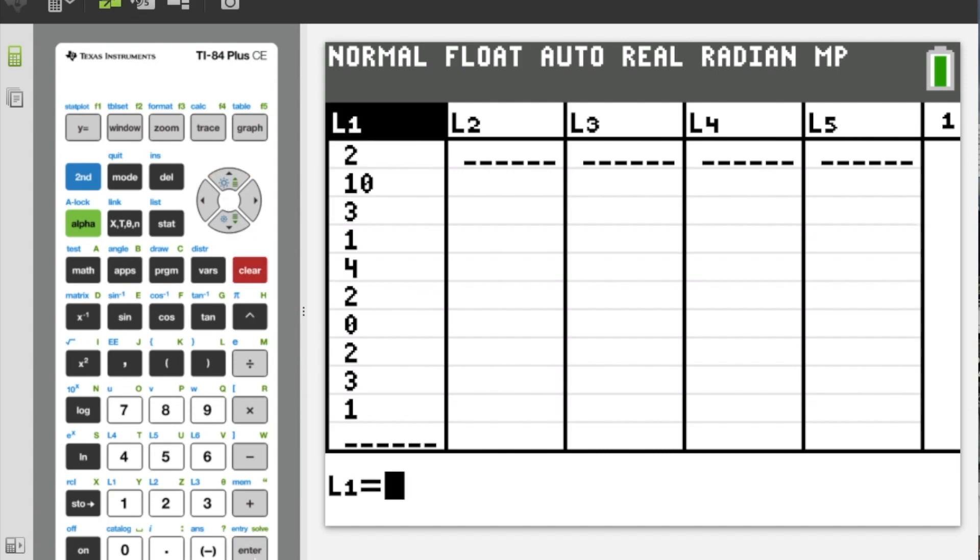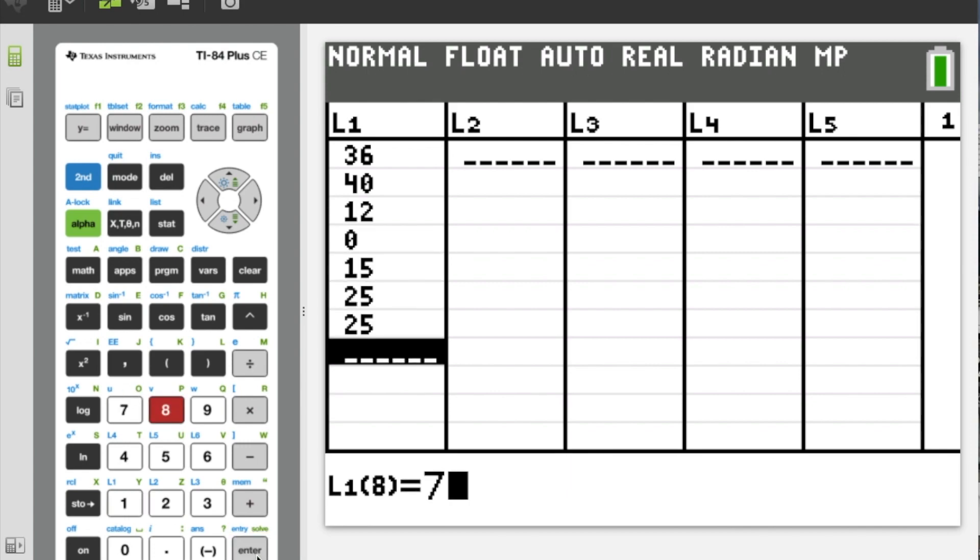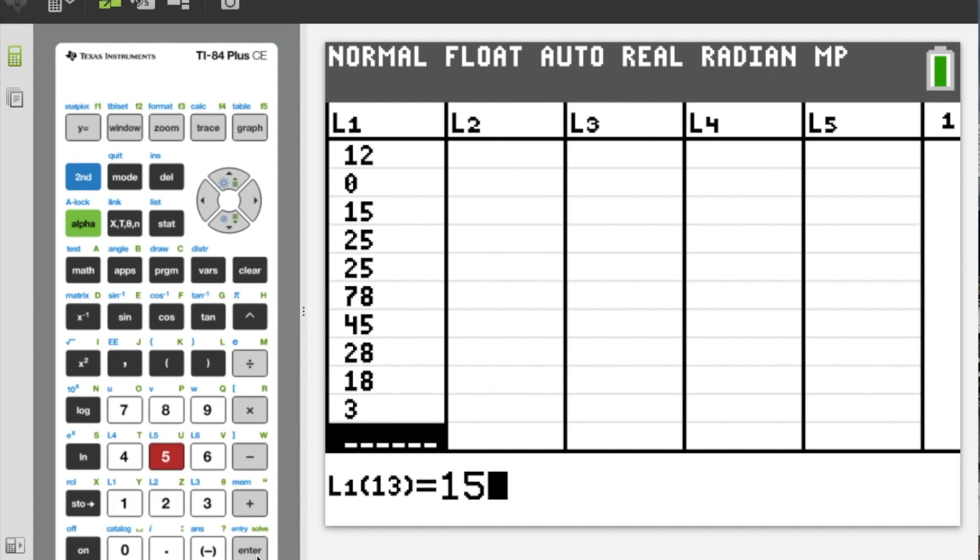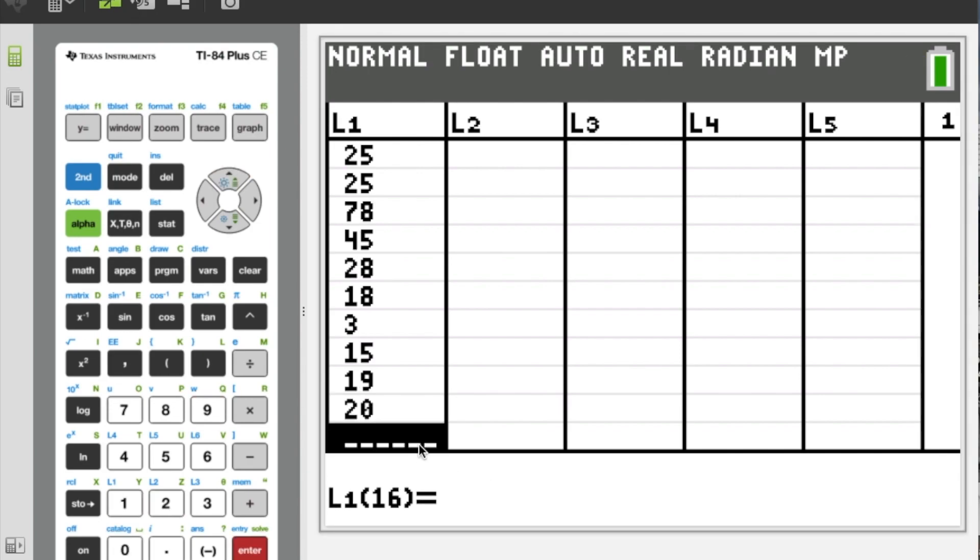I can go ahead and actually type in my data. So we have 36, 40, 12, 0, 15, 8, 45, 28, 18, 3, 15, 19, 20, 19, 20. There we go. So all my data has been entered in, as you can see.